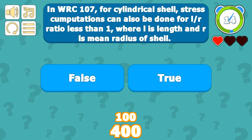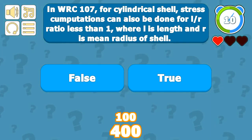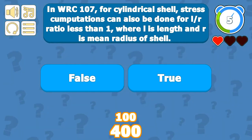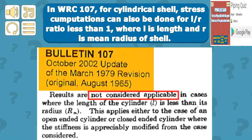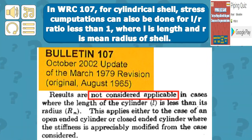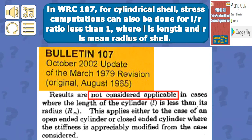In WRC 107 for cylindrical shells, stress computation for L/R ratio less than 1 (where L is the length and R is the mean radius of the shell) is false — stress computations for L/R less than 1 are not provided. WRC 107 states these are not applicable where the length of the cylinder is less than its radius, whether for open-ended or closed cylinders, since stresses are appreciably modified in that case.